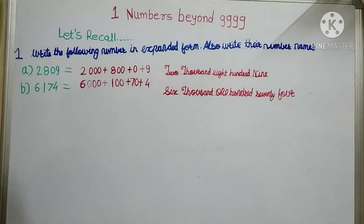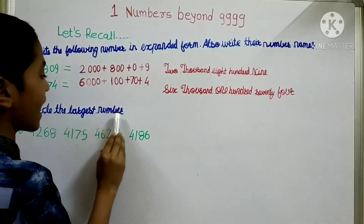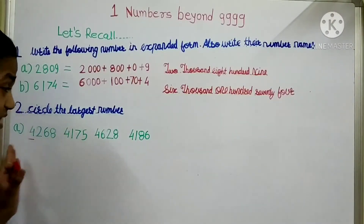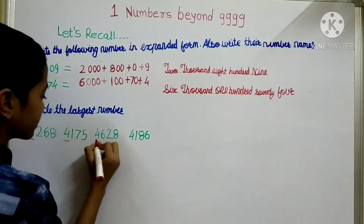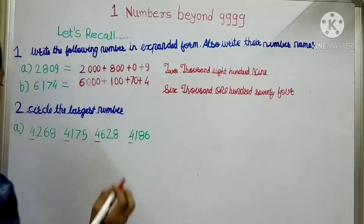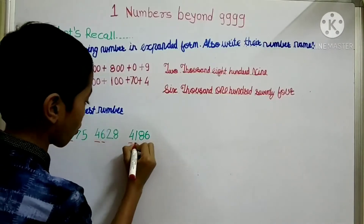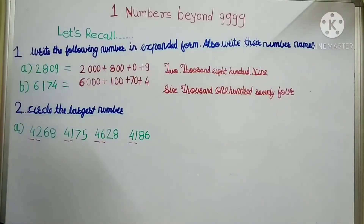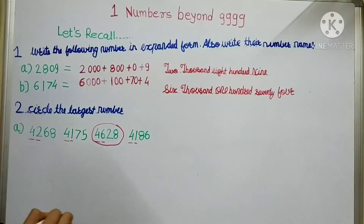The second question is: circle the largest number. To find the largest number, first see the thousands place. This is a four-digit number and the fourth digit is the thousands place. All are four, so now we will check the hundreds place. Here the digits are 2, 1, 6, and 1. One is the smallest, two is also small, and six is the largest number, so we will circle this.